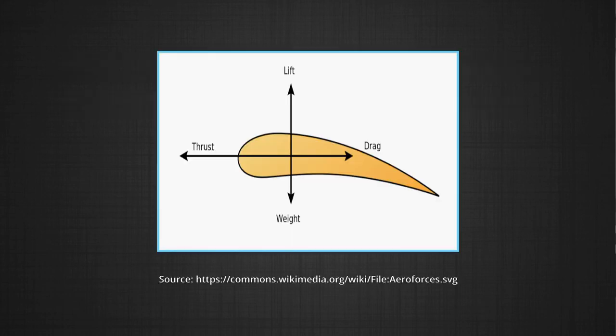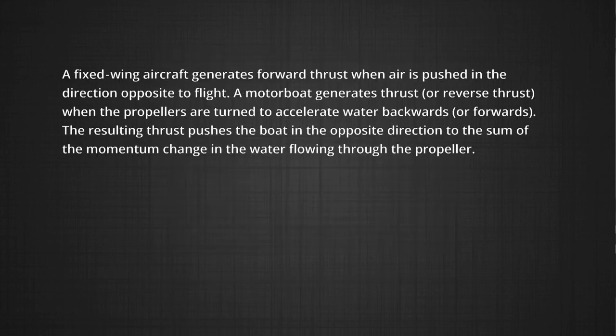For example, in this picture, forces on an aerofoil cross section are shown. A fixed wing aircraft generates forward thrust when air is pushed in the direction opposite to flight.